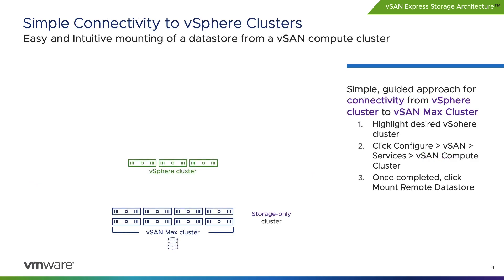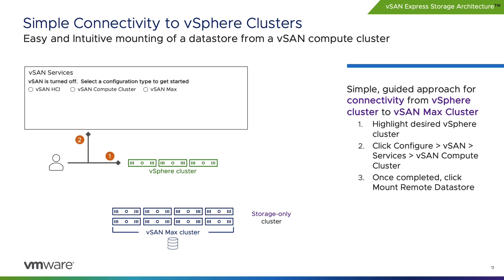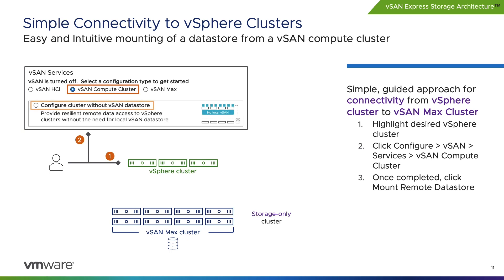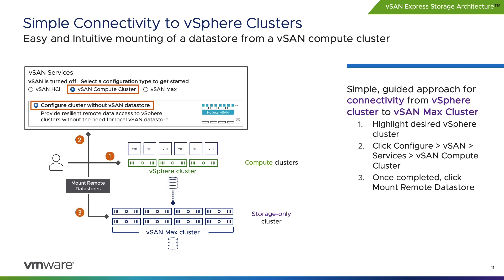Providing vSAN Max storage resources to a traditional vSphere cluster is easy. At the cluster level, simply click Configure vSAN Services and select vSAN Compute Cluster. From here, the remote datastore can be mounted and storage is ready for use. If there's no longer a need for the remote datastore, the UI offers an easy way to unmount it.